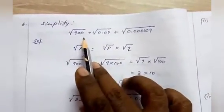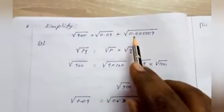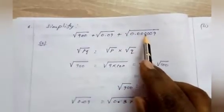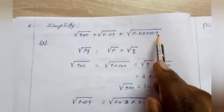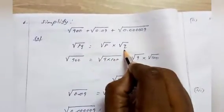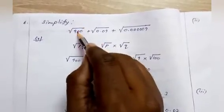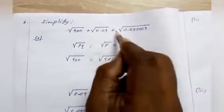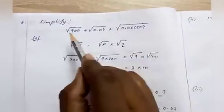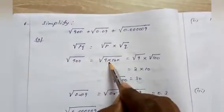The next sixth question is: simplify √900 + √0.09 + √0.000009. The solution uses the property that √(pq) = √p × √q. First we find √900 by writing it as √(9 × 100).